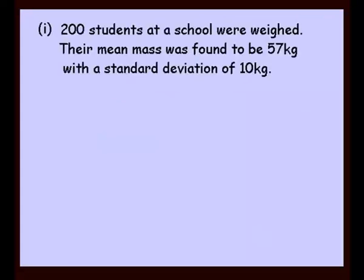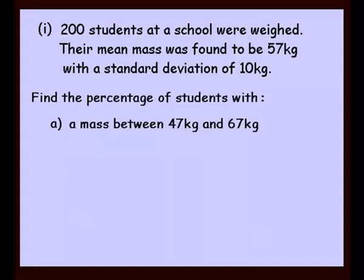Let's look at our first example. We're given that 200 students at a school were weighed. Their mean mass was found to be 57 kilograms with a standard deviation of 10 kilograms. And firstly, we're asked to find the percentage of students with a mass between 47 kilos and 67 kilos. Now our mean mass was 57. We'll jot our important information down. Standard deviation was 10. And in each of these examples, we're going to draw a bell curve.